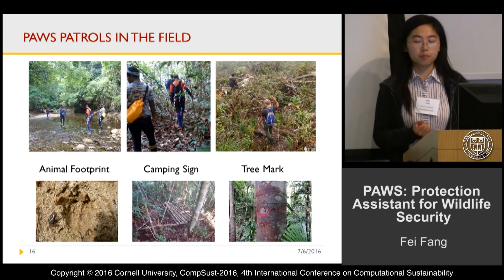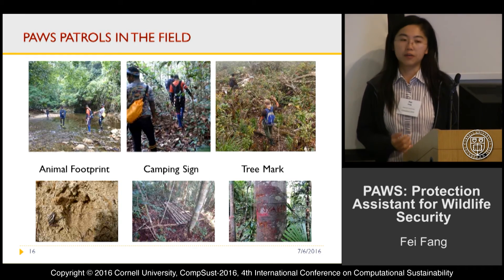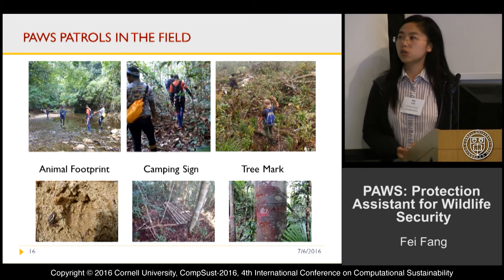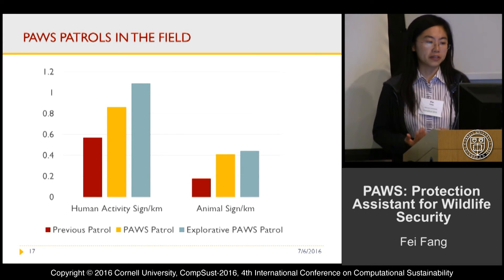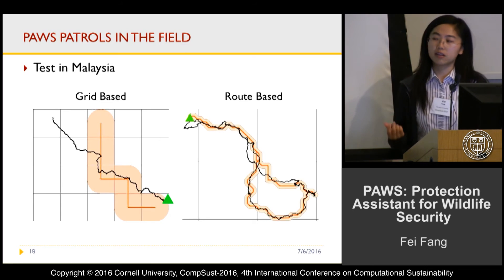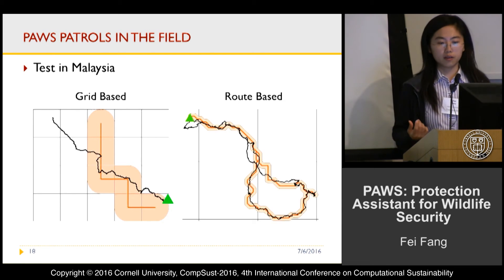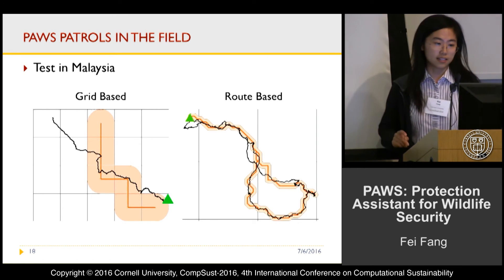PAWS has been deployed in the field in collaboration with Panthera and RIMBA. Photos show patrols guided by PAWS, during which animal signs and human activity signs were found. According to preliminary results, PAWS-guided patrols lead to a higher number of signs being found, and we look forward to future deployments for a more comprehensive analysis. With route-based thinking, the generated patrol routes, indicated by the black lines, are much easier for patrollers to follow.